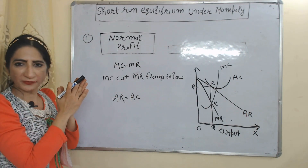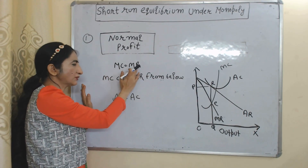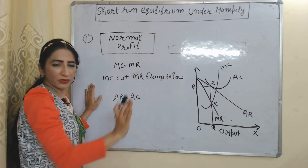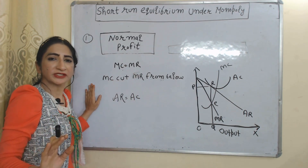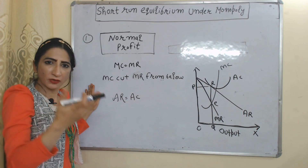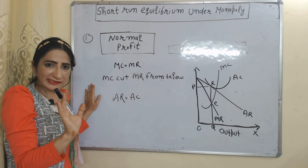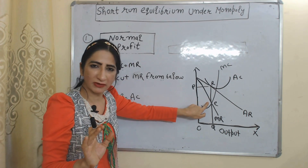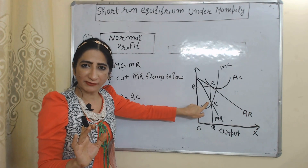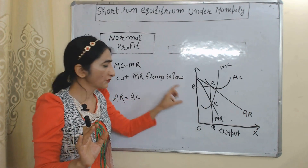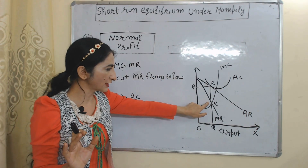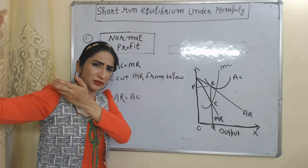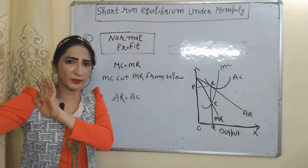Now we are going to talk about normal profit. There are three conditions of normal profit. The first two — MC equal to MR, and MC cuts MR from below — are the same as for super normal profit. At point E, MC equal to MR and MC cuts MR from below, so these two conditions of normal profit are satisfied, the same as we discussed earlier.